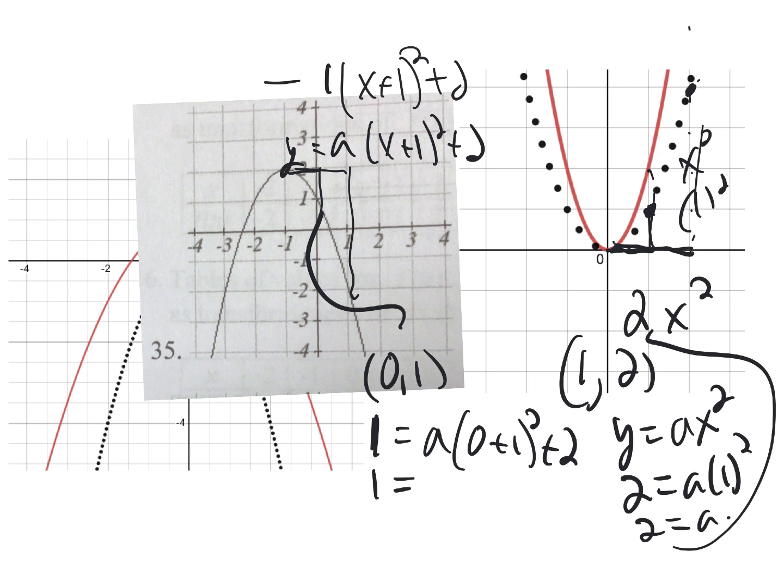So then I'm going to do some order of operations, so 1 equals A times, well, 1 squared is 1 plus 2, so I'm going to subtract 2. I get A equals negative 1, and that's exactly the same I got analytically.